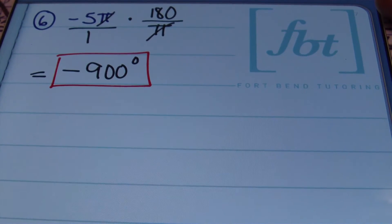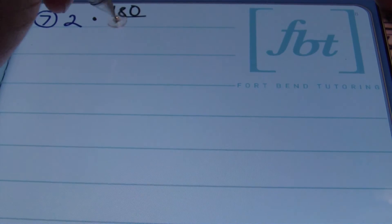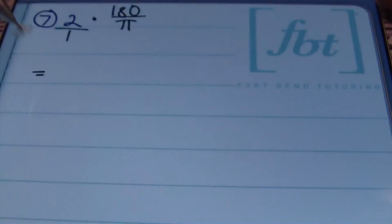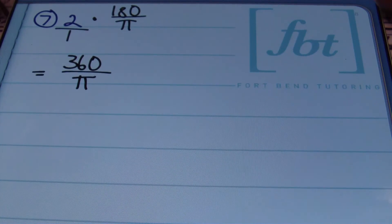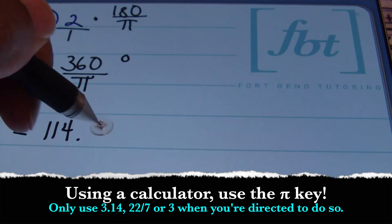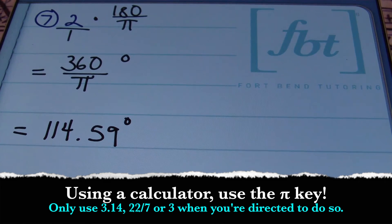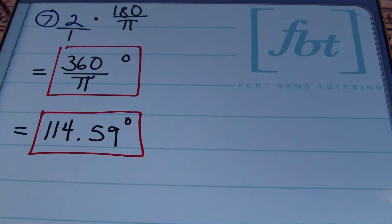In problem number 7, our angle is simply 2 radians — no π involved. Multiply by 180/π, placing 2 over 1. That gives 360/π degrees. For a decimal representation, divide using your calculator to get approximately 114.59 degrees, rounded to the nearest hundredth. Depending on your class requirements, either form of the answer is acceptable.